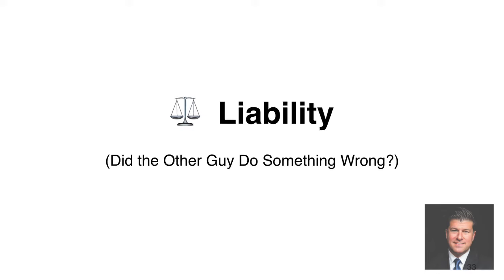Liability is: did the other guy do something wrong? In a car crash case, things like the rules of the road and the layout of the property where the crash happened — what street, what direction, what traffic control devices — are really important. A lot of car crash liability analysis basically comes down to what law or safety rules did the other guy break in causing the crash.